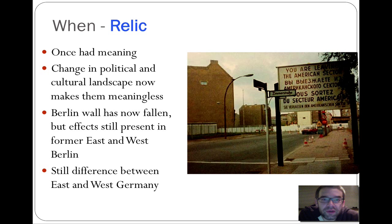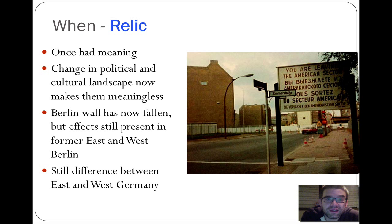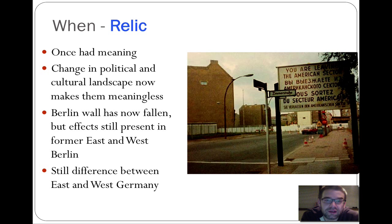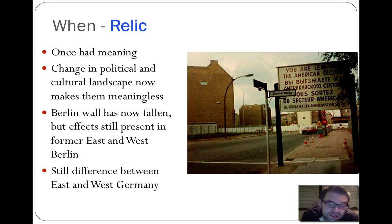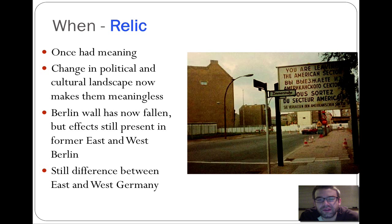The last type is a relic boundary — one that has historical significance but has diminished in practical function. Checkpoint Charlie, the dividing border between East and West Berlin, is a Cold War relic boundary. It once had incredibly significant meaning and greatly influenced the cultural landscape through the Berlin Wall. Today it doesn't hold the same significance, but you can still observe in the cultural landscape — the architecture and urban character of East versus West Berlin — how that division continues to leave its mark.